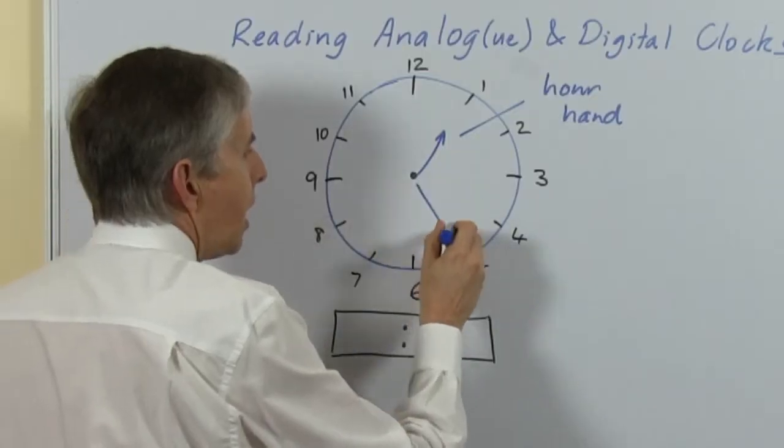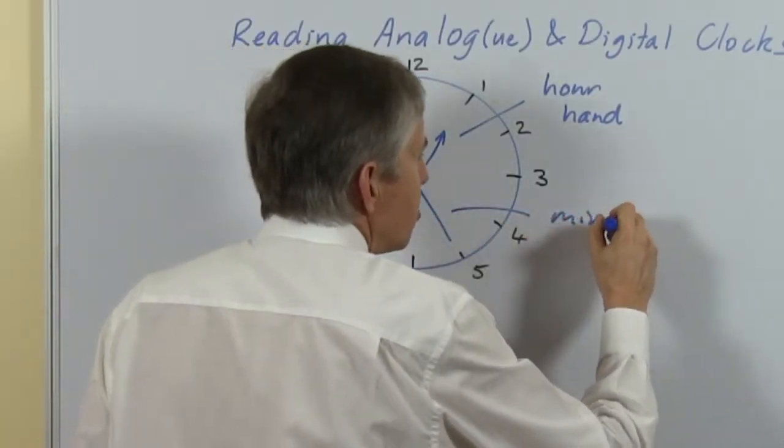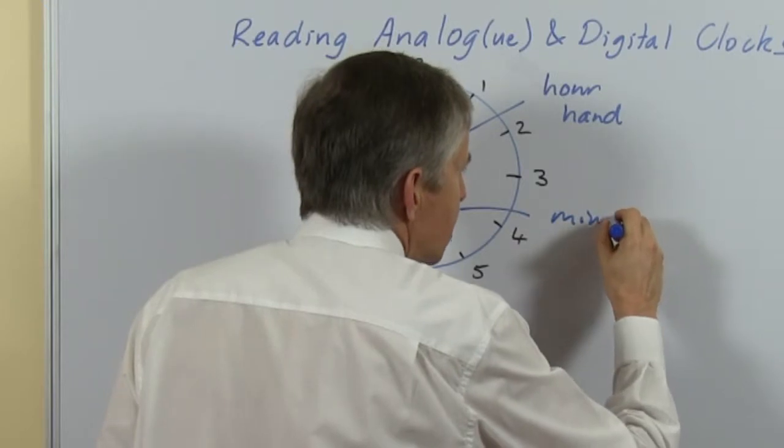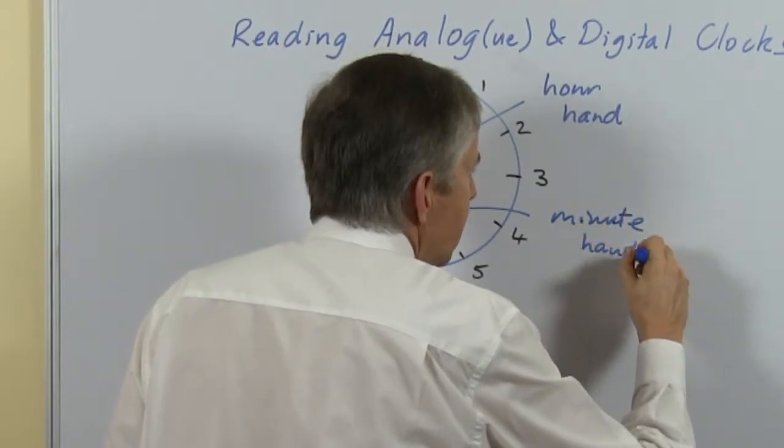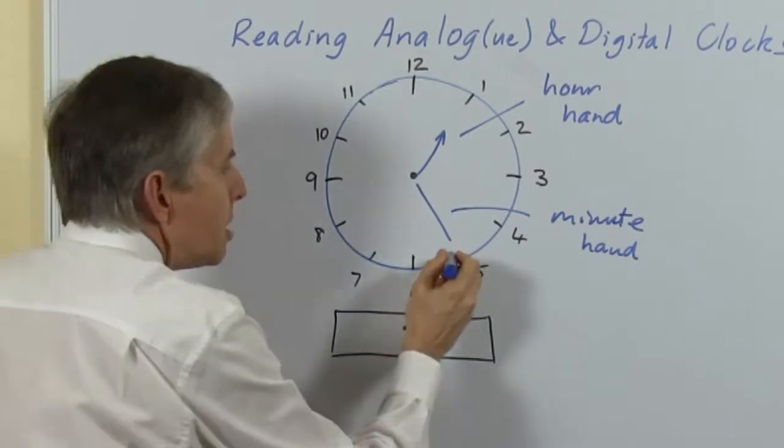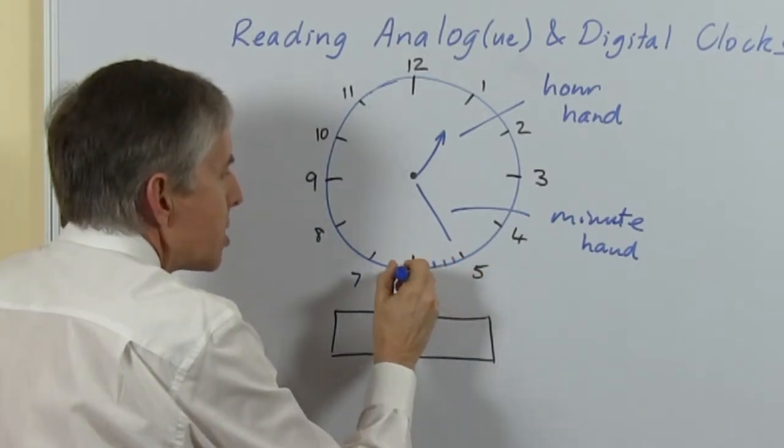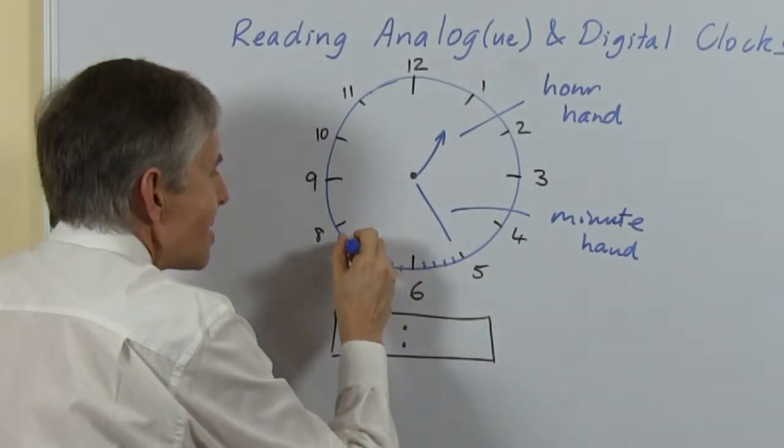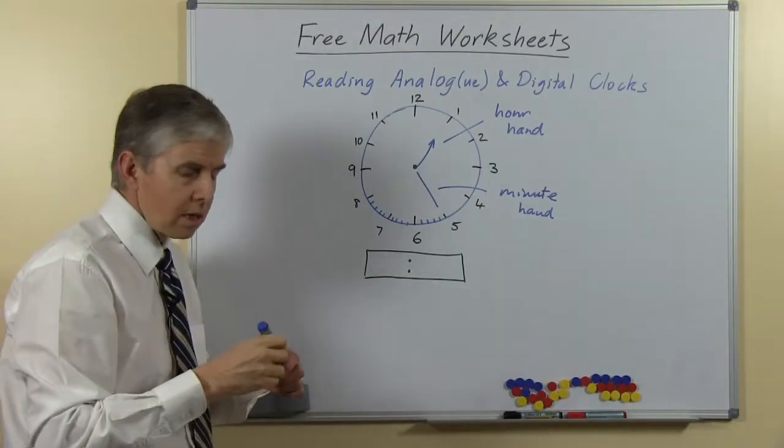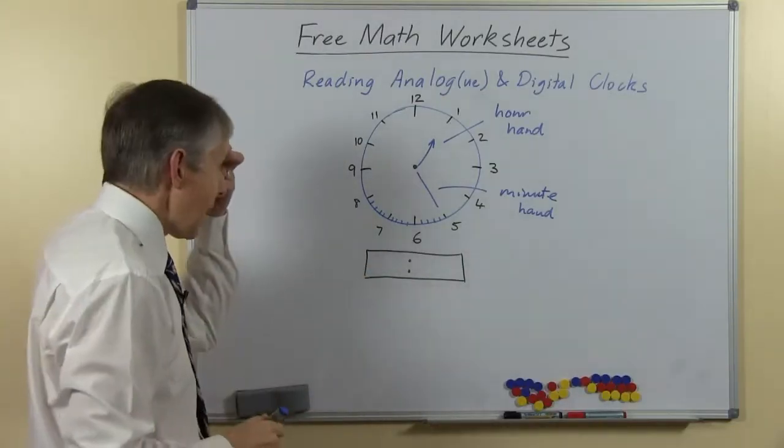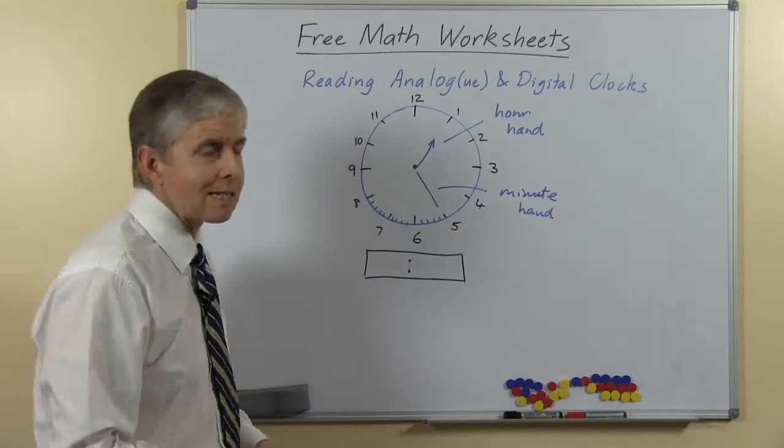Then we have a long hand, or again there's a better title, the minute hand, which marks off the minutes. And so between the markings for the hours we have another set of markings of course that show the minutes.